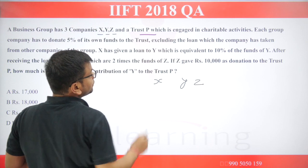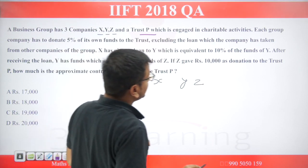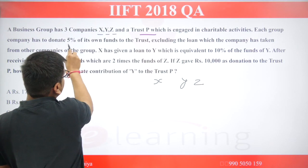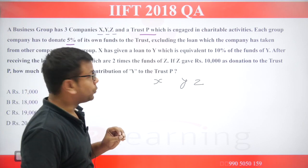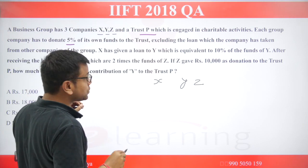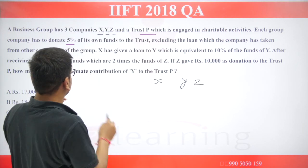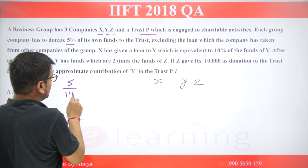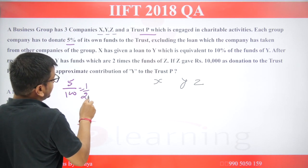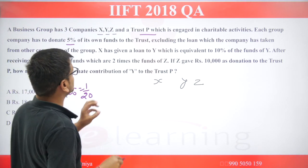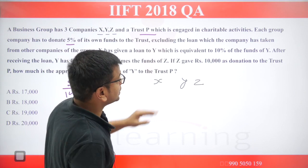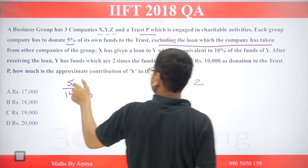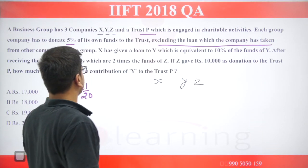Trust P is engaged in charitable activities. Each group company has to donate 5% — that is 1 by 20 — of their funds to the trust. So 5% is actually 1 by 20. We need to see what loans are excluded from the amount that is 5% donated.